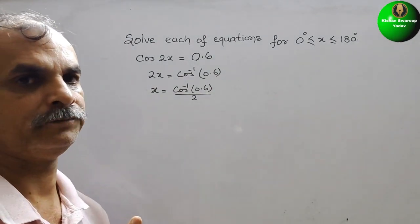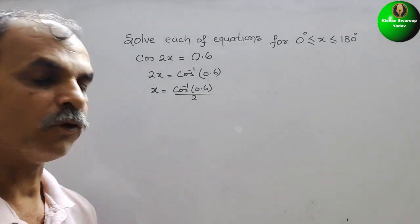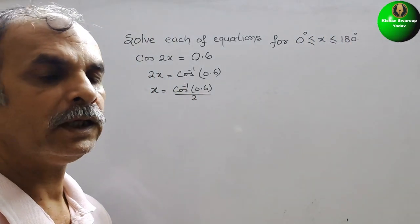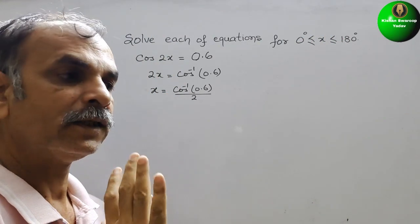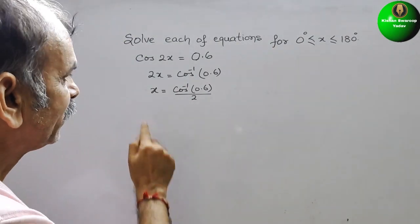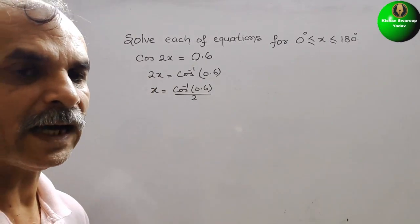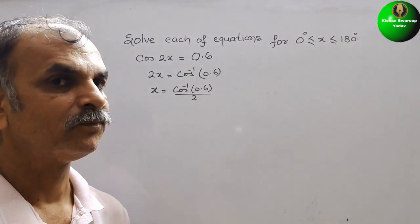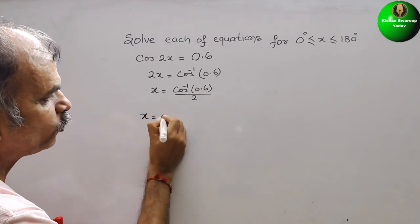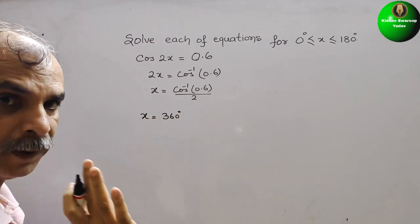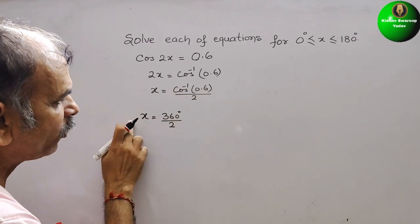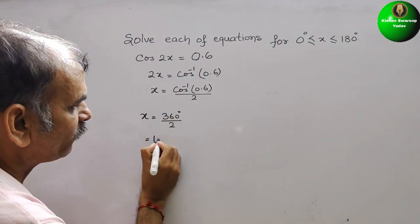Here we will get only 1 angle. They have given the range 0 to 180 degrees only. Now, here they have given 2x. We know that one full cos cycle is 360 degrees. Since there is a factor of 2, we divide 360 by 2, and that gives us 180 degrees.